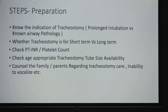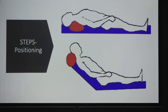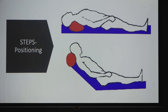For positioning, give a small extension below the neck to keep it extended, but avoid excessive extension. With too much extension there is a mismatch between the skin incision level and the tracheal incision level. When the child is returned to the flex position, the skin incision is at a different level from the tracheal incision, and eventually the tracheostomy tube shaft impinges on the suprastomal area, potentially leading to stenosis.